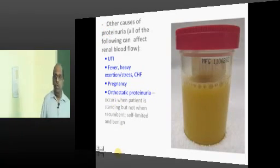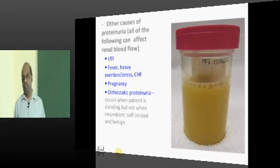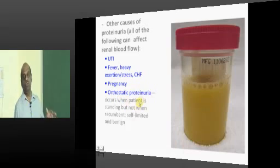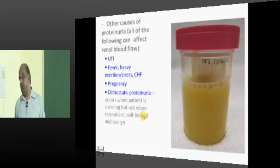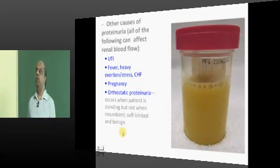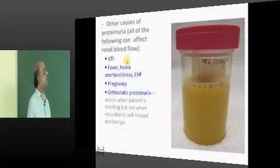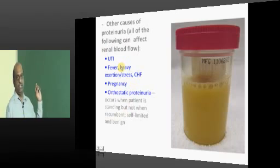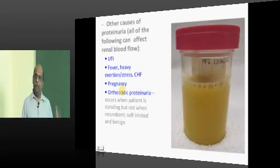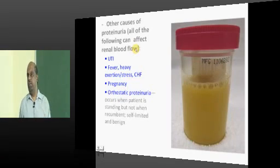Any patient who has a UTI, urinary tract infection, or heavy exertion, stress, CHF, or pregnancy can have proteinuria. Some people have orthostatic proteinuria - whenever the patient is standing but not when recumbent, he will have proteinuria. Fever, pregnancy, and orthostatic factors affect renal plasma flow and have an impact on protein loss into urine.